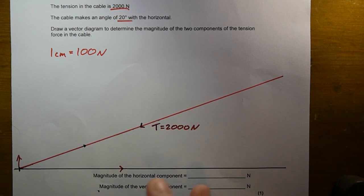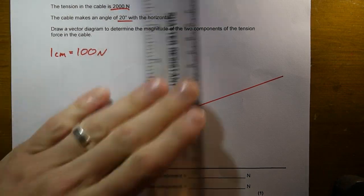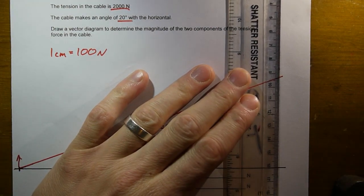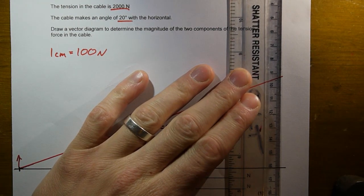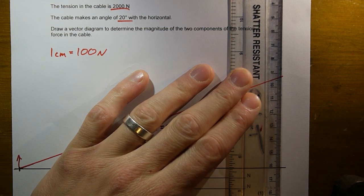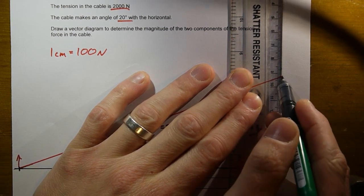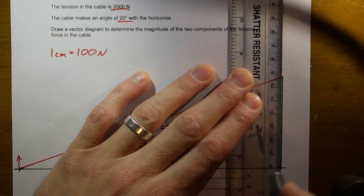So I'm going to draw a vertical line, and that vertical line is going to be at right angles with this black horizontal line that I've drawn, and it's going to match up and meet the top corner of that red line. There we go.